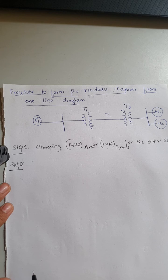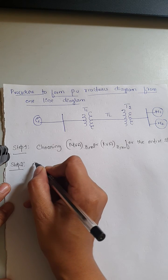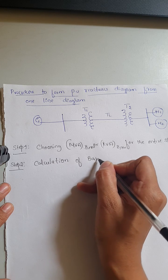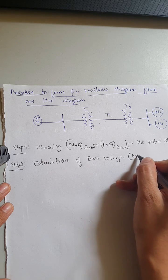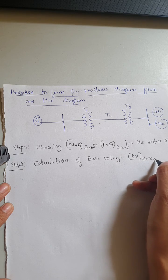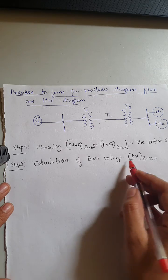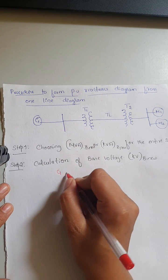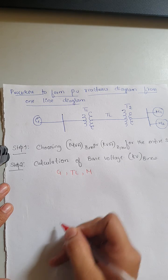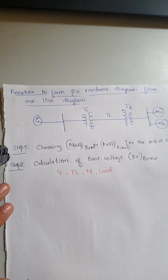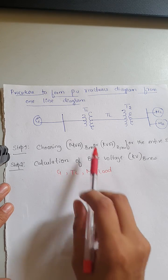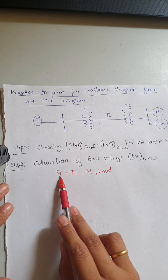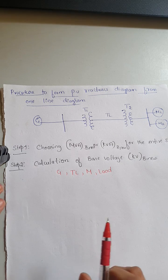Step two is the calculation of base voltage. Here you calculate the KV base new for selected components in the single-line diagram. You are going to calculate base voltage for the generator, the transmission line, the motor, and if a load is present, for the load as well. Before applying the formula, we need to differentiate which components are on the high voltage section and which are on the low voltage section.